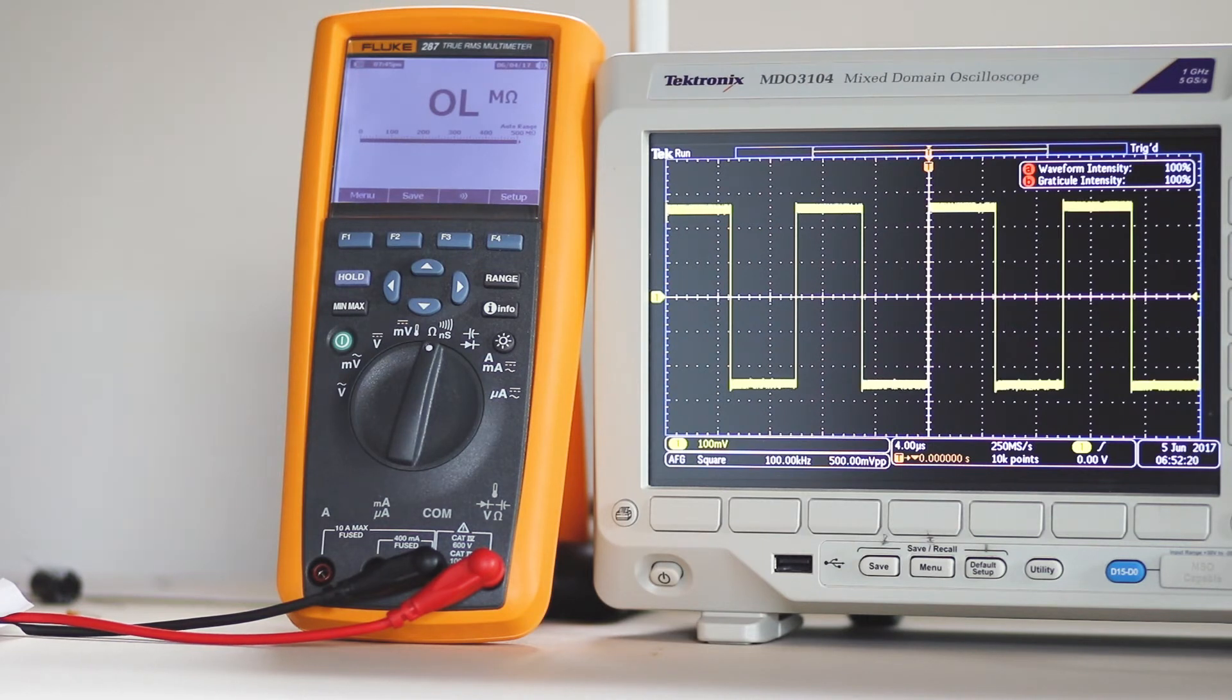If these types of measurements are not sufficient for your application, the next step up is an LCR meter. Using this instrument, the procedure is the same as for the multimeter in capacitance mode. Just clip onto the leads and take the reading.